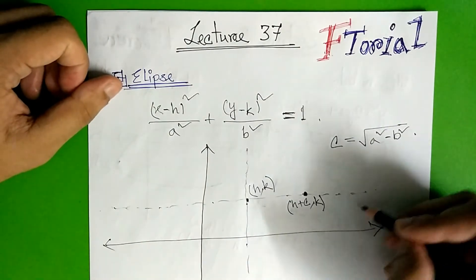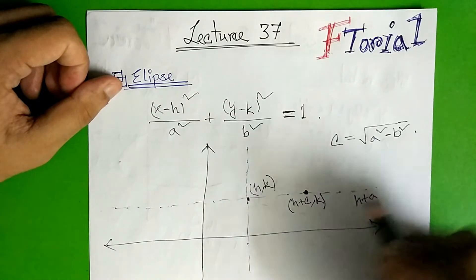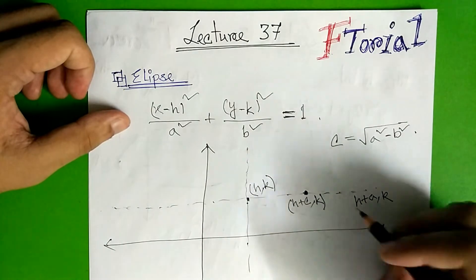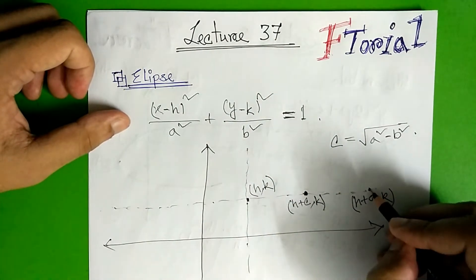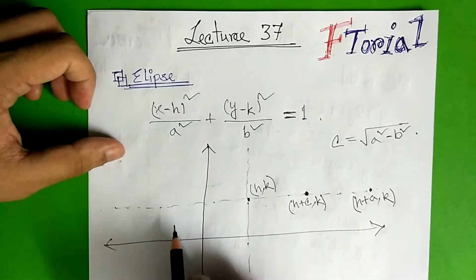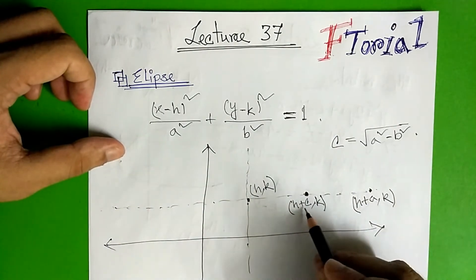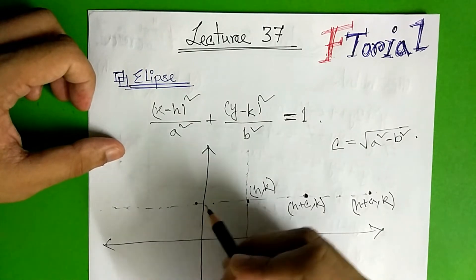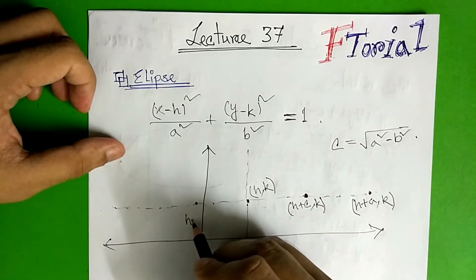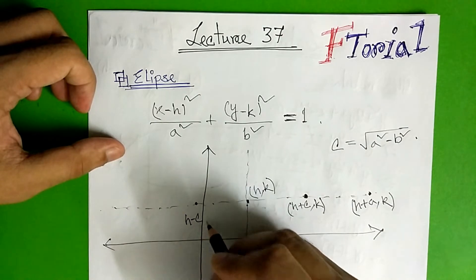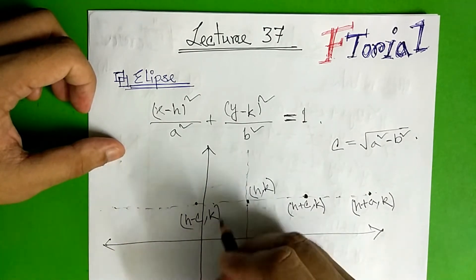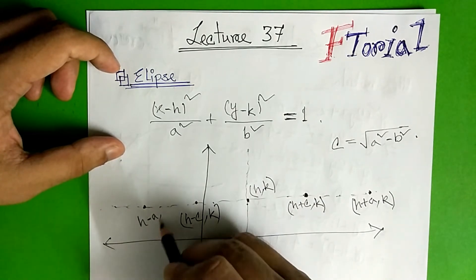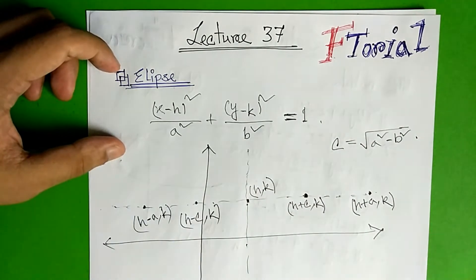Then from the center, we add h and a to get a point. Same way, we add b to get another point. Then with minus, we get another point on the other side — h minus a, and h minus b, same way.